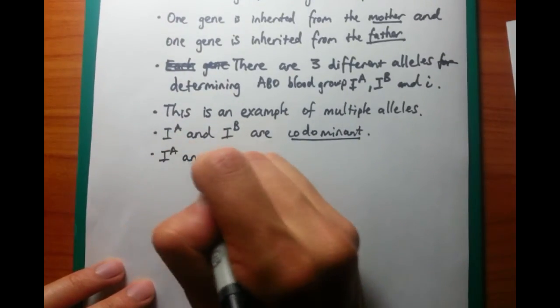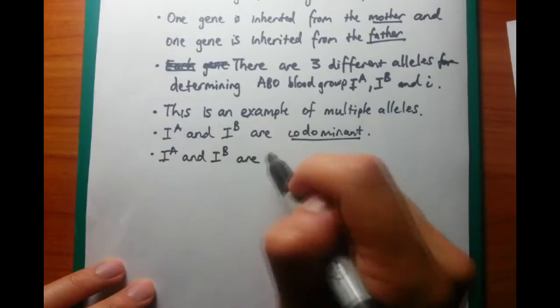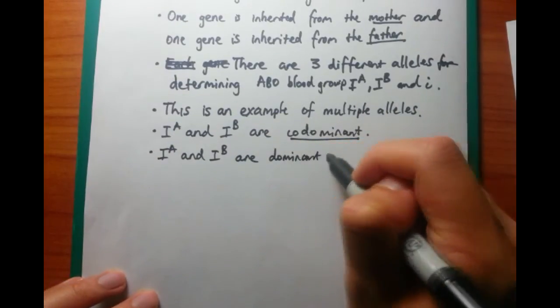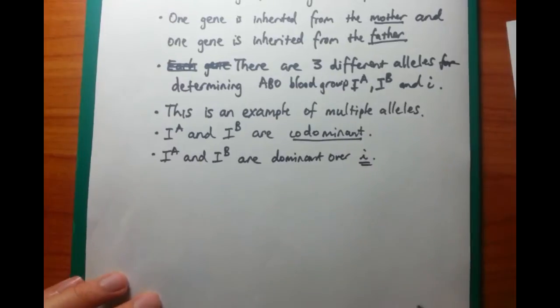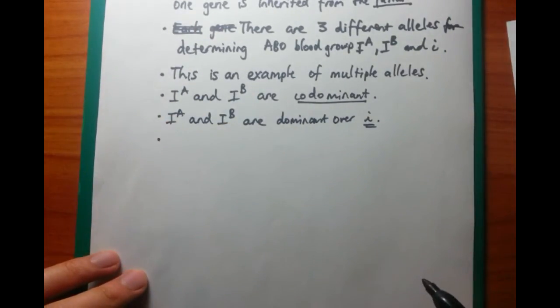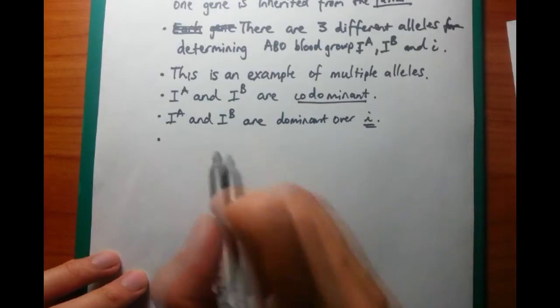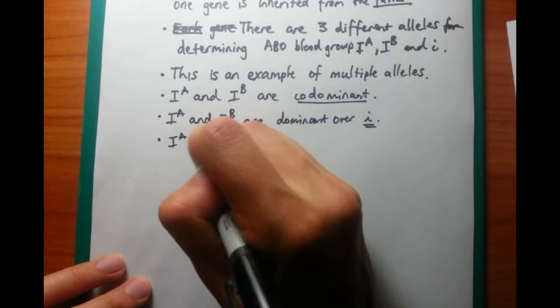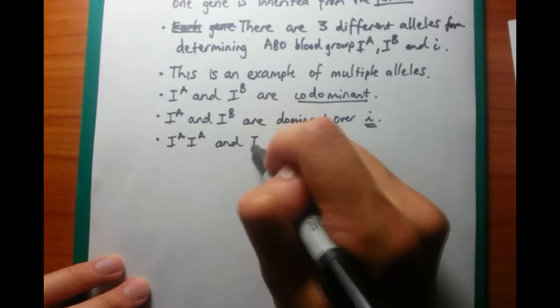So I^A and I^B are codominant. And what this means is that if they are together, then both of them have an effect on the phenotype. So we have an AB blood group. No allele, I^A or I^B, overrides each other if they're just those two together. Now, given that they are codominant, they are dominant over little i.